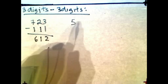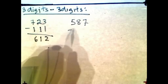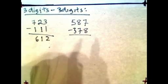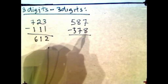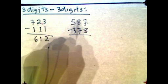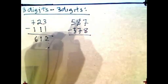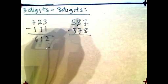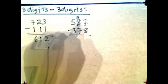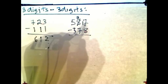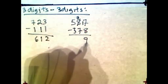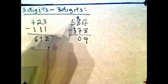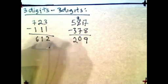Let's try another one: 587 minus 378. 7 minus 8 — 8 is a bit bigger than 7, so we need to borrow from the 8 tens, which becomes 7. That 10 carries over to the 7, making it 17. 17 minus 8 is 9. Then 7 minus 7 is 0. And 5 minus 3 is 2. The answer is 209.